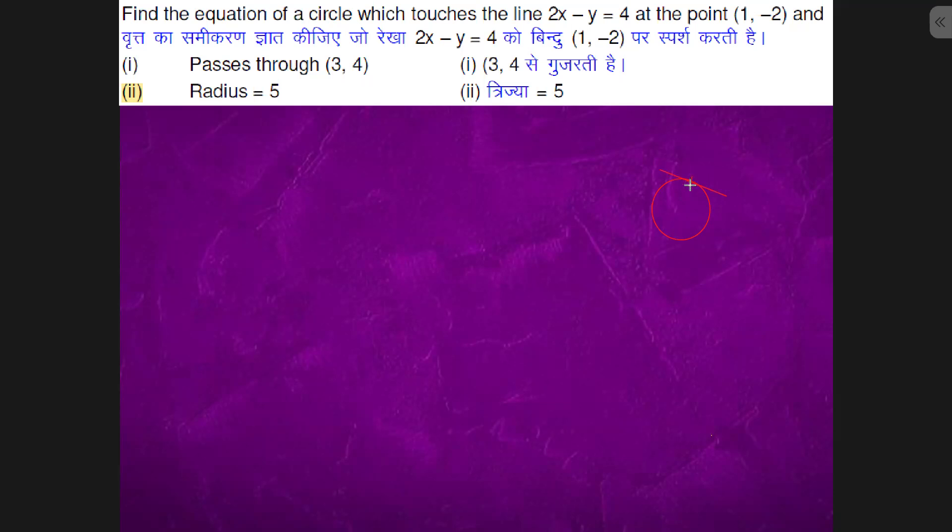So we know that the point is (1, -2) and the line is 2x - y = 4.